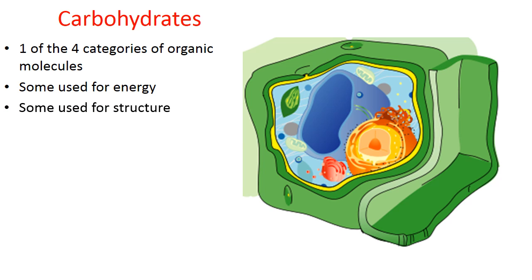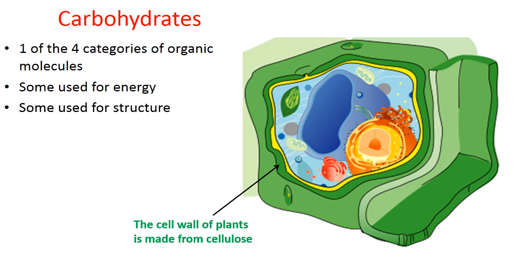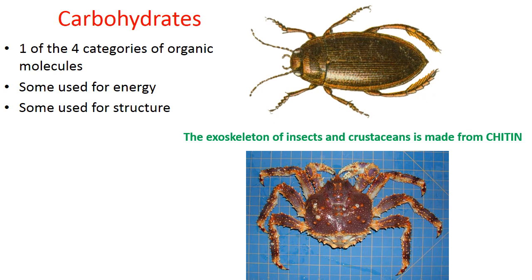Other carbohydrates are used to build — they're used for structure. For instance, the green cell wall of plants is made from a carbohydrate called cellulose. This is a structural carbohydrate used to build the outer layer called the cell wall of plants. Another structural carbohydrate is called chitin. The exoskeleton of insects and crustaceans is made from a structural carbohydrate called chitin.